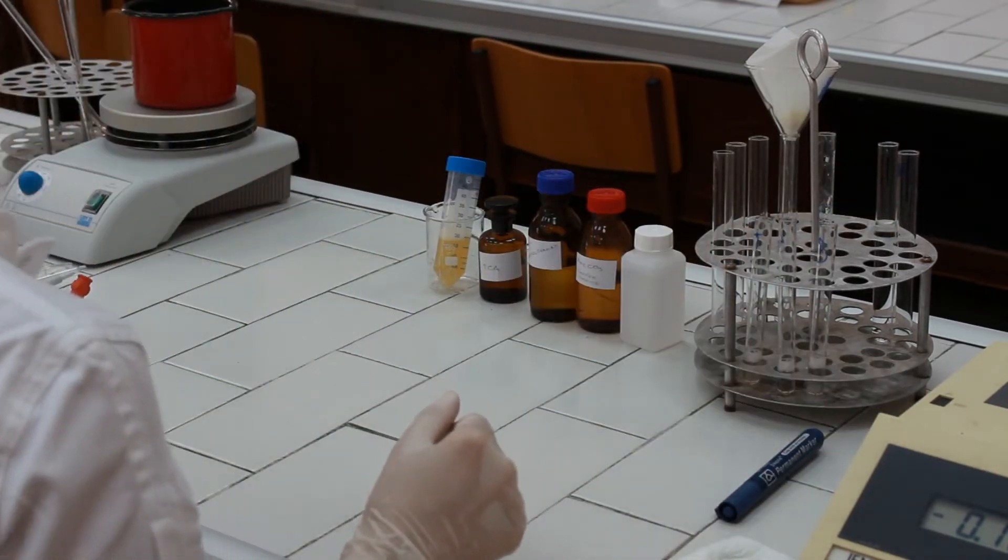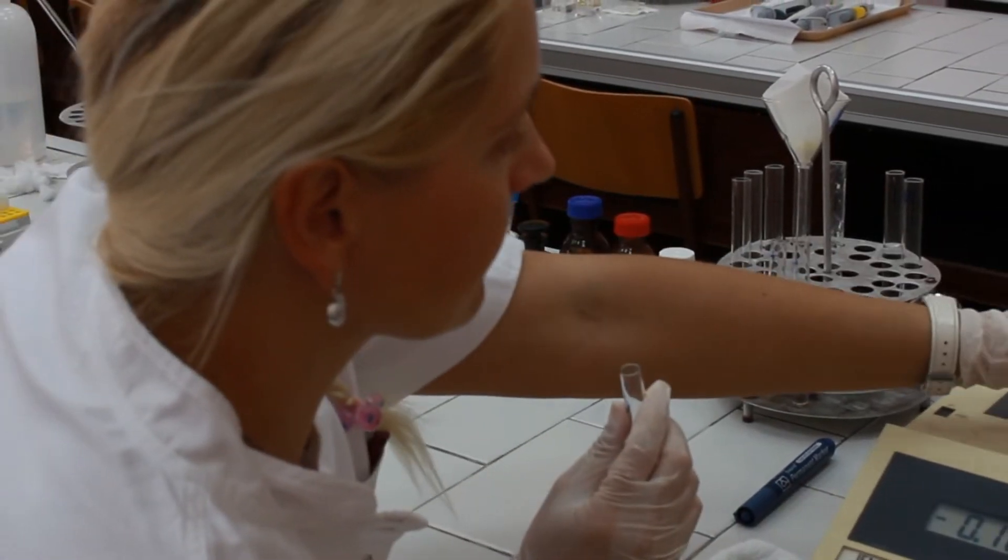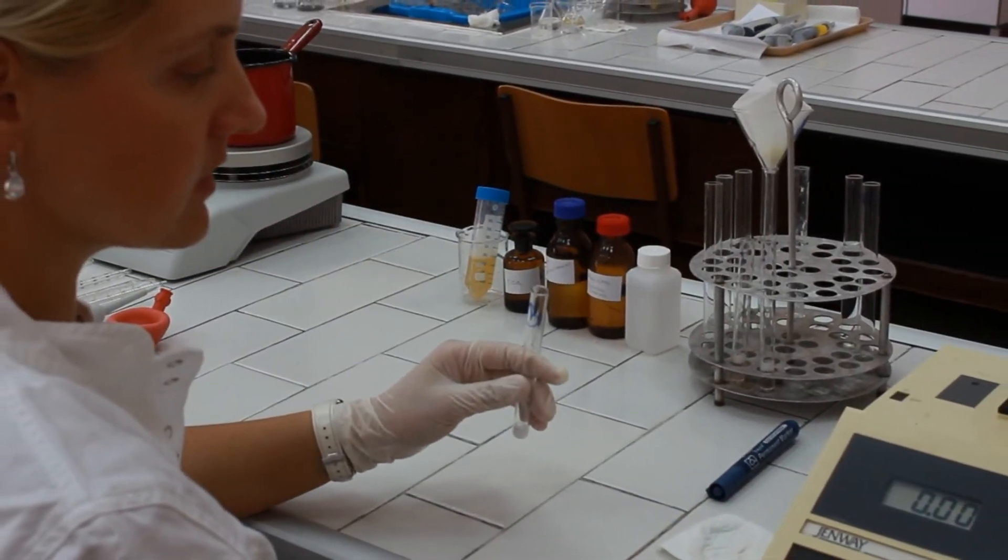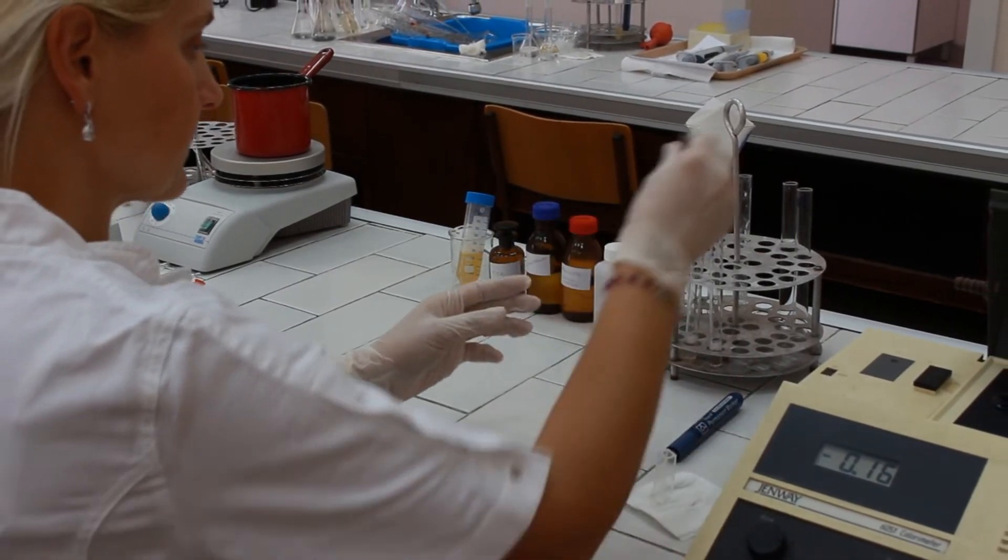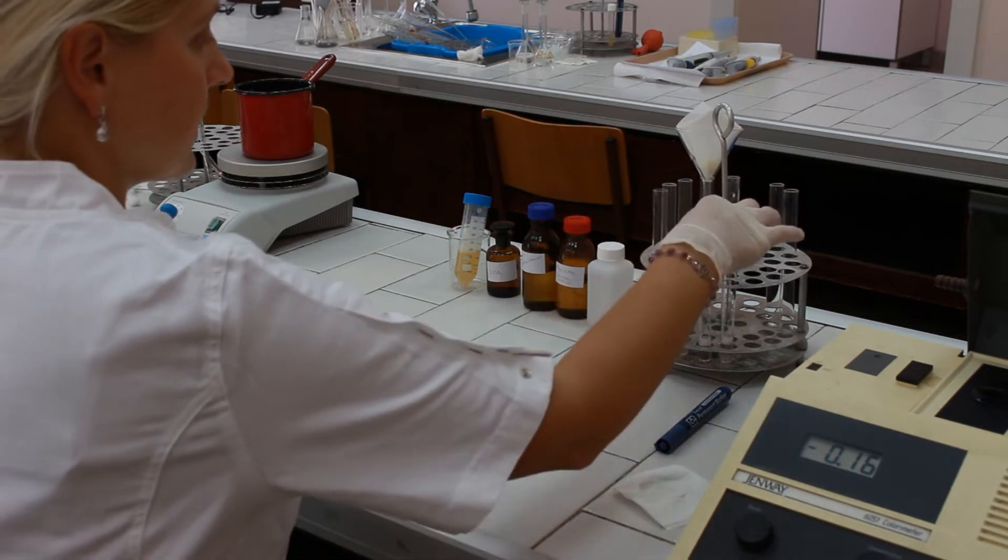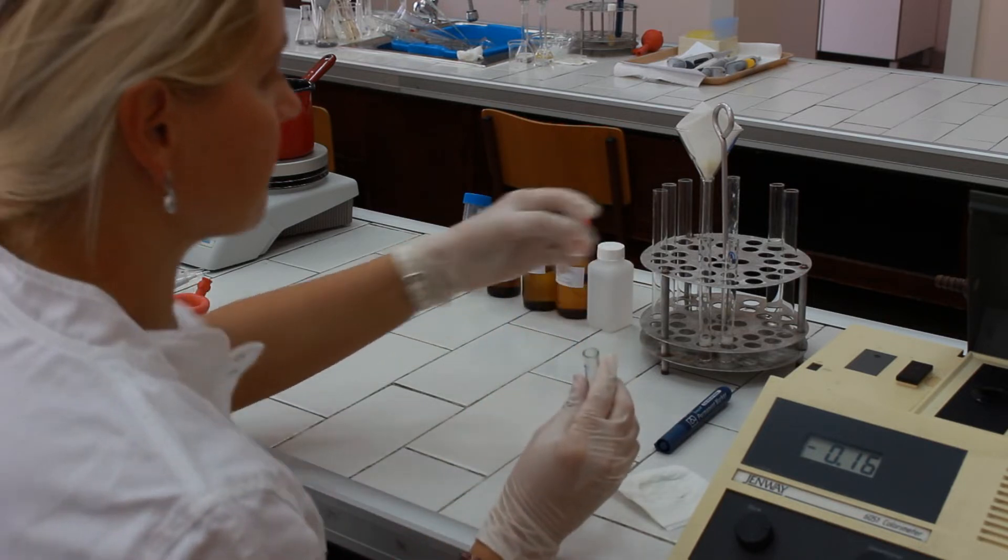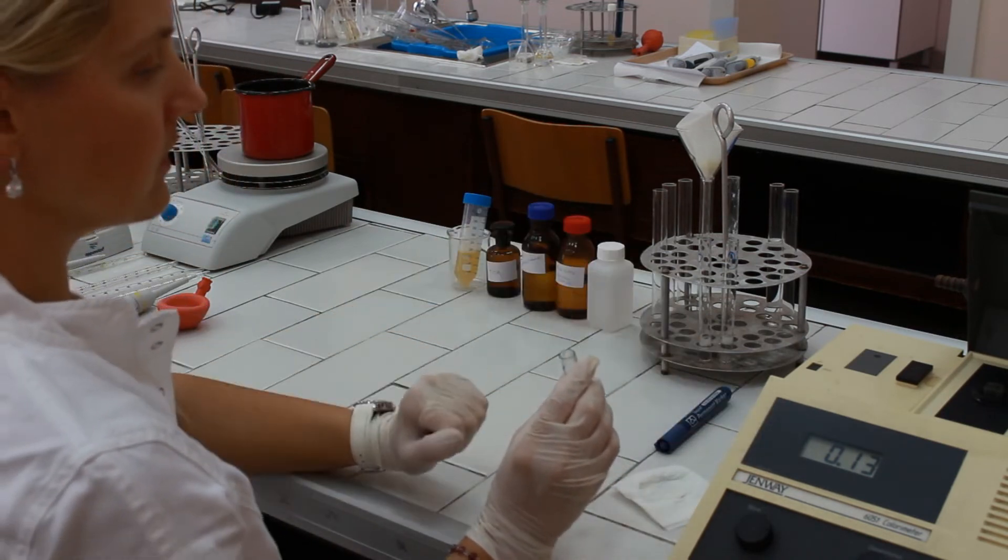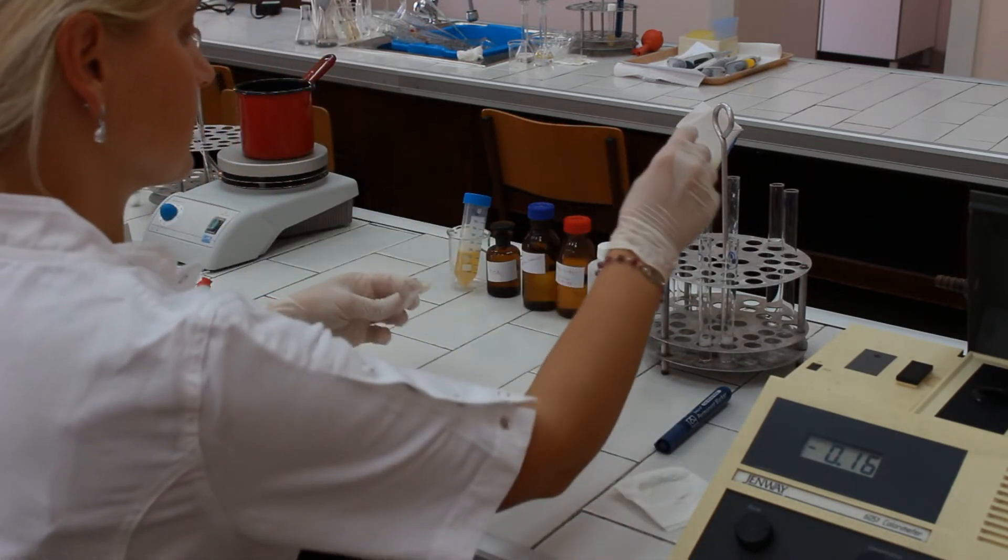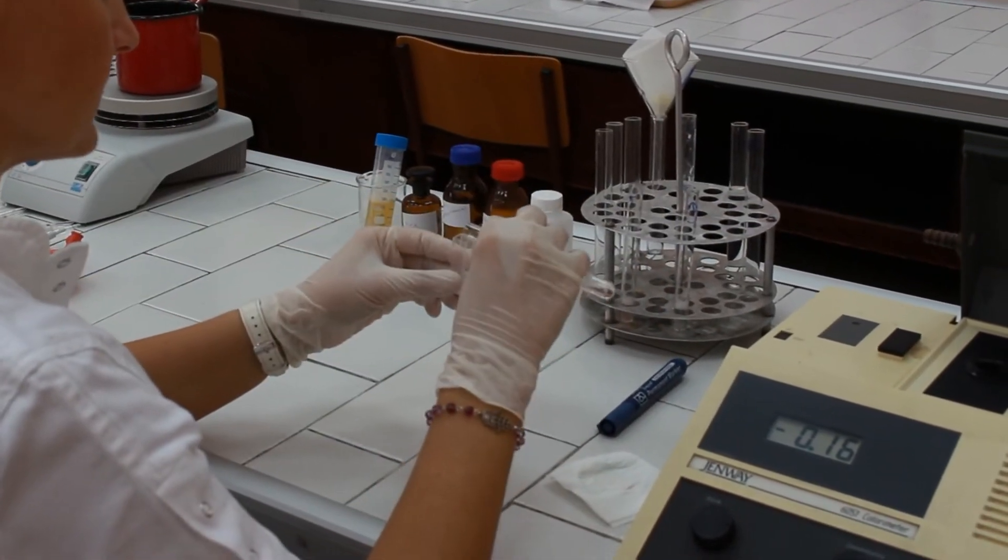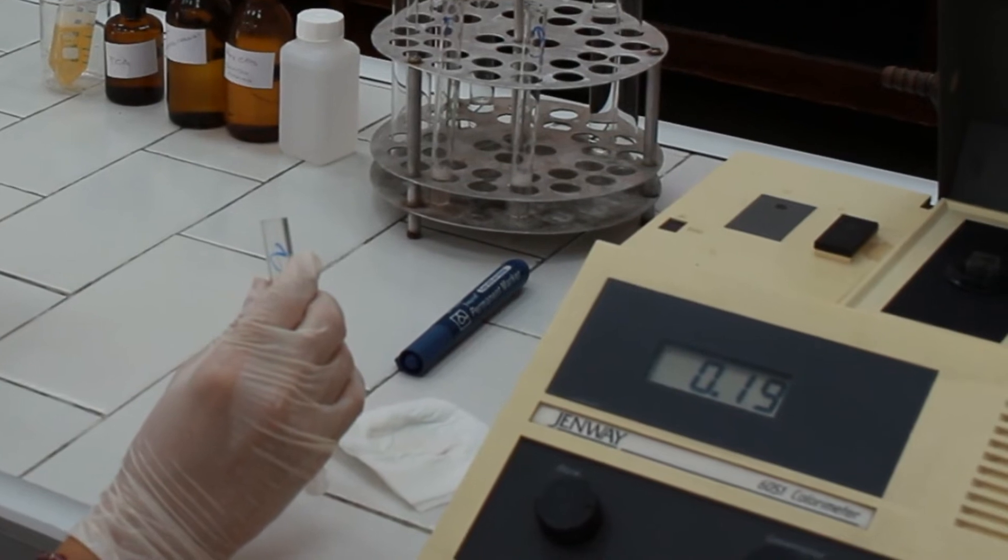Now the procedure is to take the cuvette with the blank solution and adjust the instrument to zero. Take the T test tube and pour the solution to the cuvette and read the absorbance. Take the S tube and again read the absorbance.